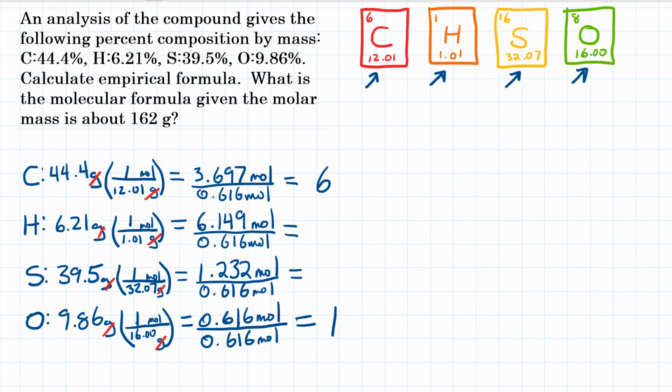For hydrogen, 6.149 divided by 0.616 is 9.98, so right about 10. And then sulfur, 1.232 divided by 0.616 is exactly 2. So these numbers are a lot better.